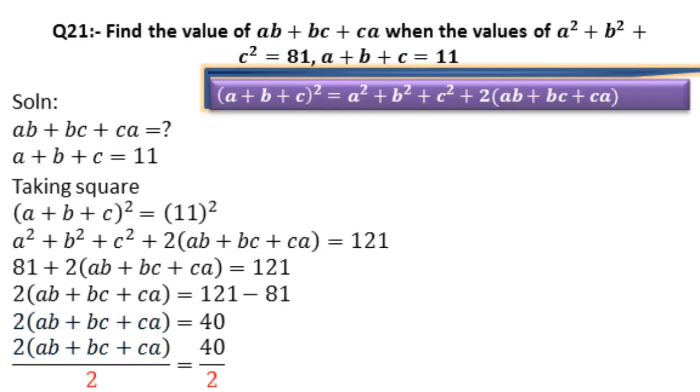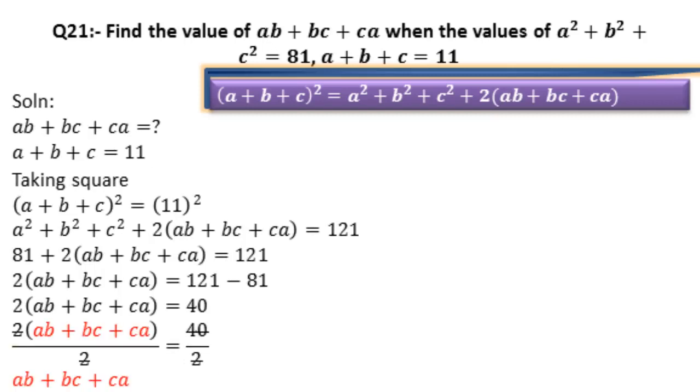2 is divided on both sides. 2 is cancelled with 2, and 40 is also cancelled by 2. So ab + bc + ca is written, equal comes as it is. When we divide 40 by 2, it becomes 20.